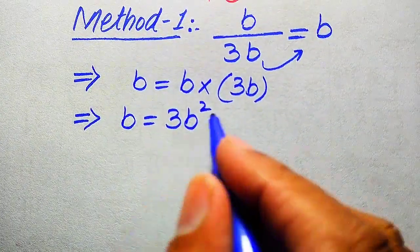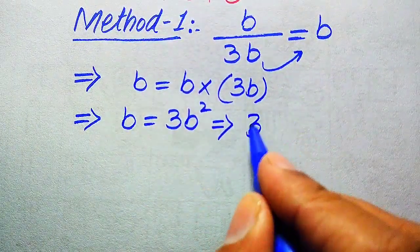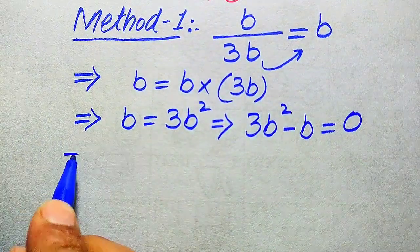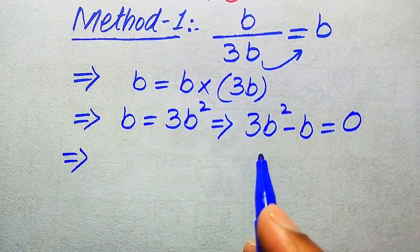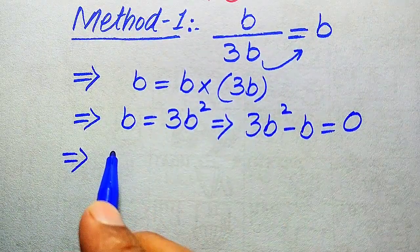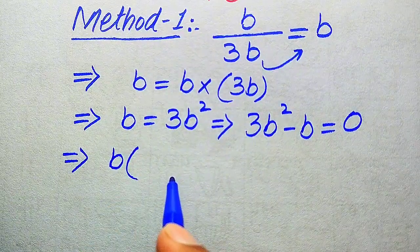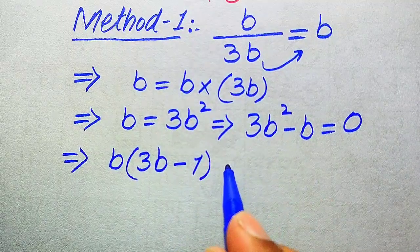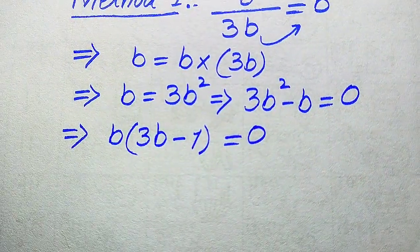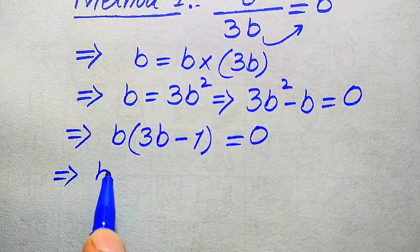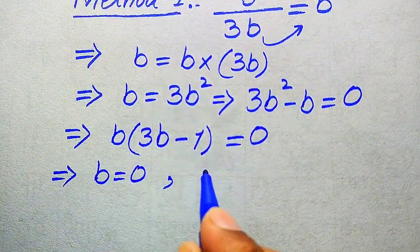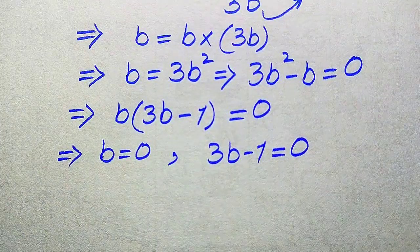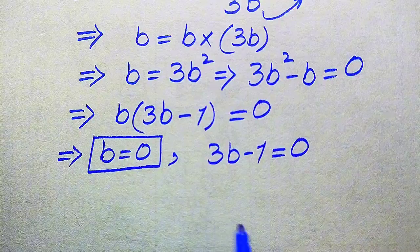In the next step we move b from the left hand side to the right hand side, and it becomes 3b squared minus b equals zero. Now b is common in both terms, so we take b as a common factor and get b times (3b minus 1) equals zero. We divide this into two cases: the first case is b equals zero, and the second case is 3b minus 1 equals zero.